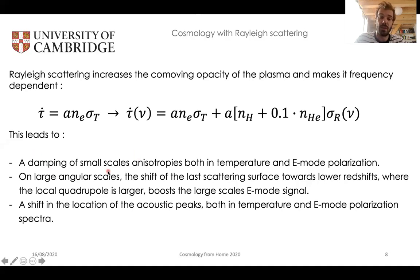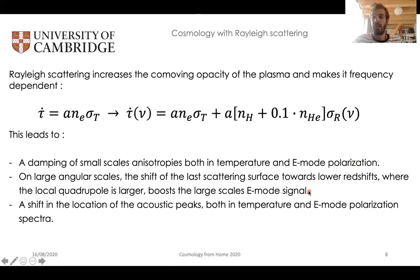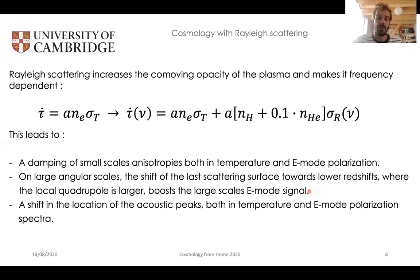This frequency-dependent increase of the co-moving opacity is responsible for the shift of the visibility function, but it also leads to a damping of small-scale anisotropies, both in temperature and in E-mode polarization. The shift of the visibility function has two main effects. First, it boosts the large-scale E-mode signal, because due to Rayleigh scattering the local quadrupole at scattering will be slightly larger — the universe will have expanded a bit compared to the Thomson scattering-only case — and since the local quadrupole boosts the E-mode signal, we observe a boost in the large-scale E-mode signal. We also observe a shift in the location of the acoustic peaks, because the sound horizon is now also slightly larger due to the shift of the last scattering surface.